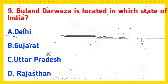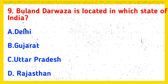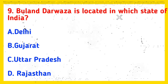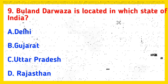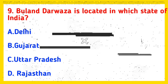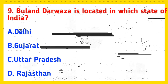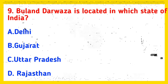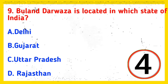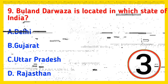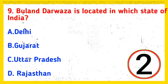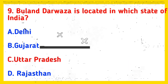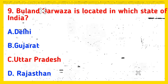Q9: Buland Darwaza is located in which state of India? Option A: Delhi, Option B: Gujarat, Option C: Uttar Pradesh, Option D: Rajasthan. And the correct answer is Option C, Uttar Pradesh.